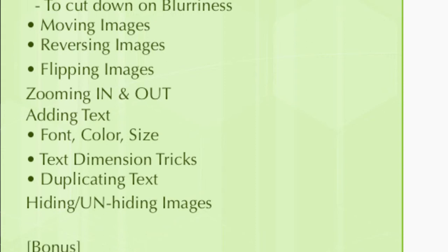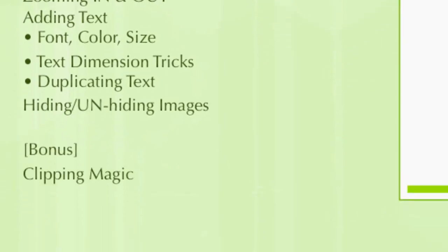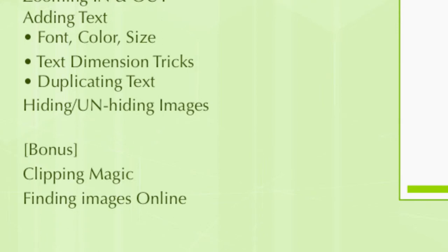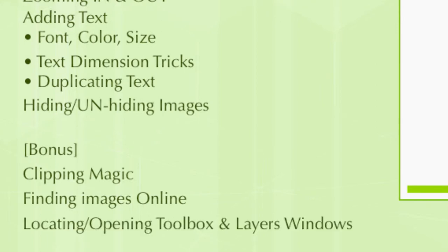Hiding and unhiding images. And the bonus — Clipping Magic. But wait, there's more. We will also go find images online the safe way with Google. And we're going to locate and open the text and layers windows. It'll make sense when I show you, because these things disappear and it's just good to know where they are. I had a hard time finding them, but now I know where they are and I'm going to tell you.